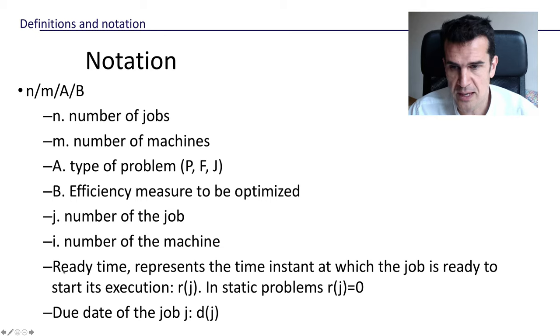So we are going to use the letter R to denote the ready time, which represents the time at which the job is ready to start its execution. So in the static problems, which are the ones we're going to deal with in this course, this ready time for all the jobs is going to be zero. All the jobs are available at time zero. Each job will have a certain due date, and we're going to denote that due date with the letter D.